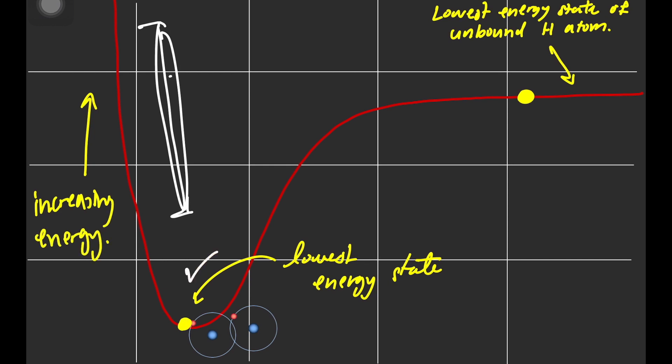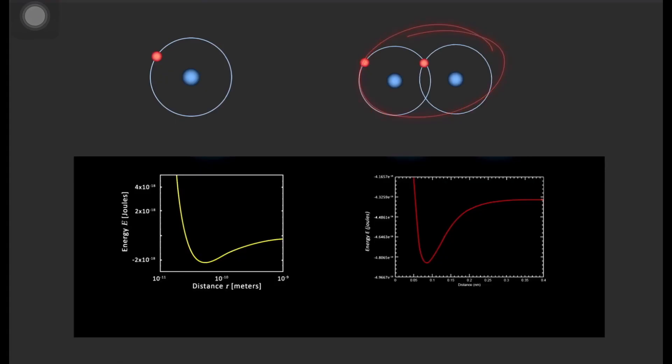So the tip of the curve is where the two atoms are both content to stay, which is the lowest energy state. As you can see between the two graphs, the energy of the two atoms system is less than the energy of the two separate atoms systems. Therefore, they will naturally combine to form a molecule, forming two types of bonds: covalent bonds and ionic bonds.